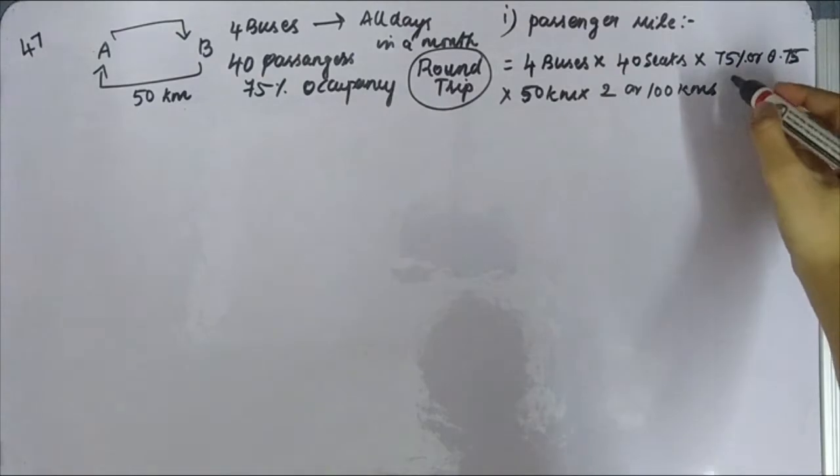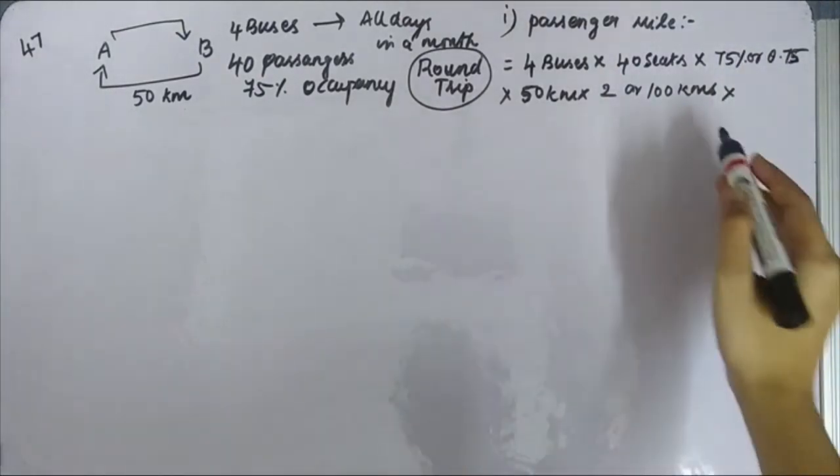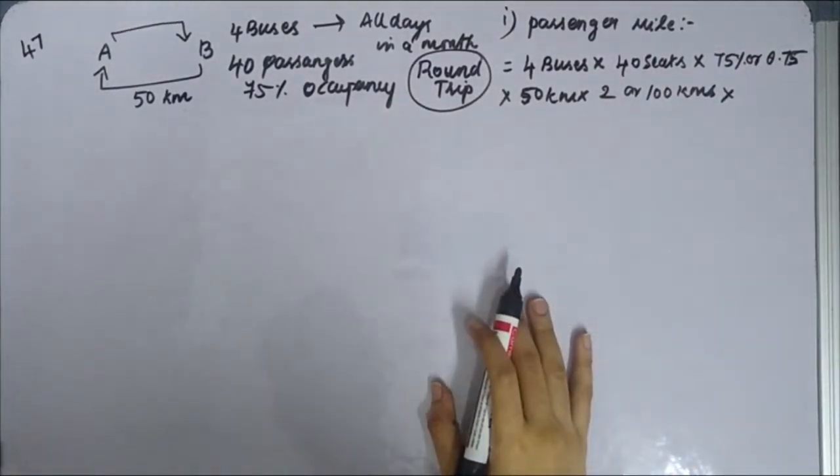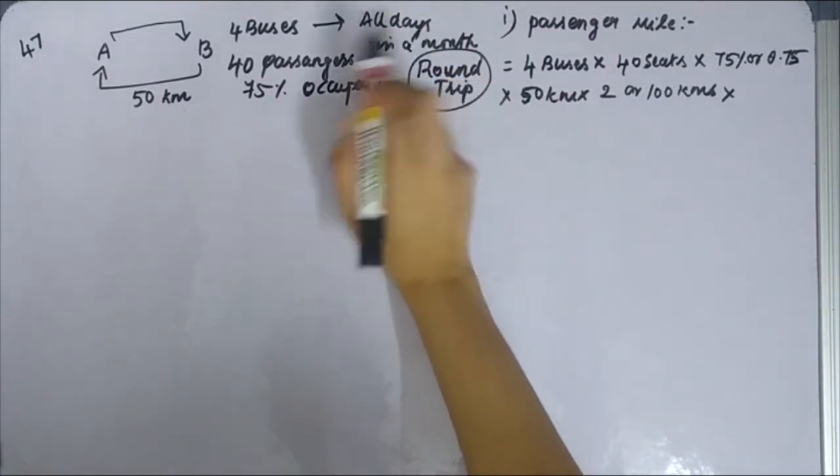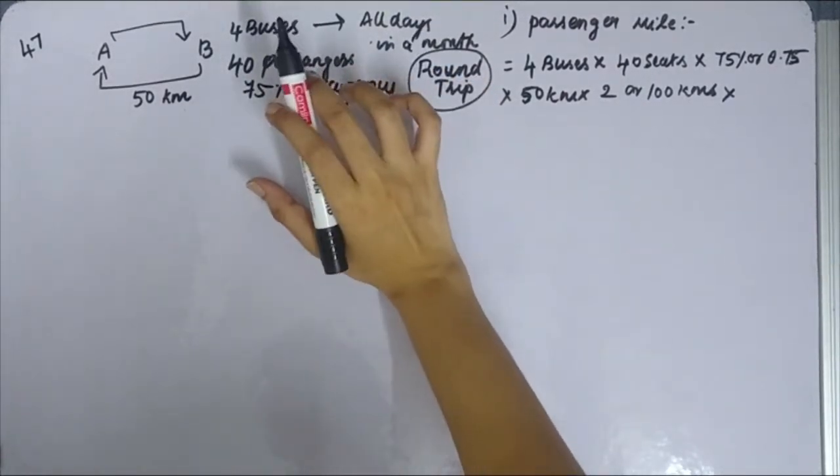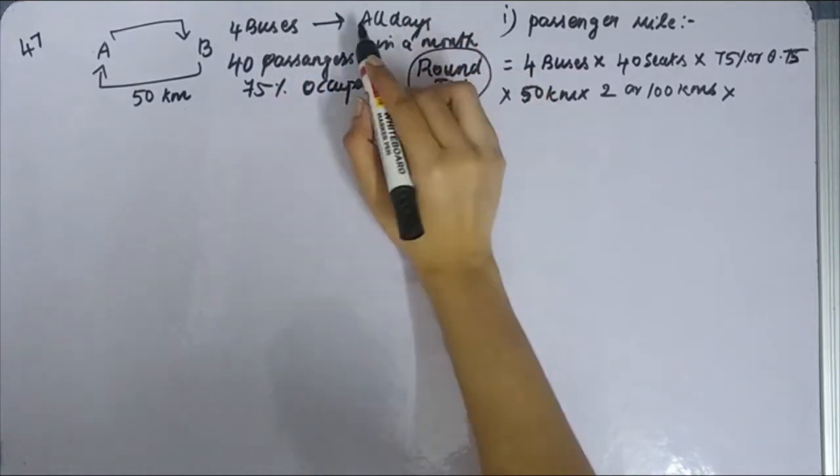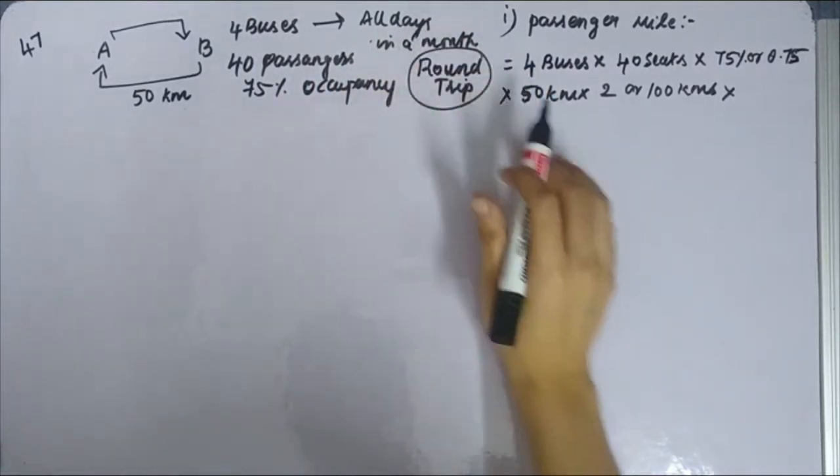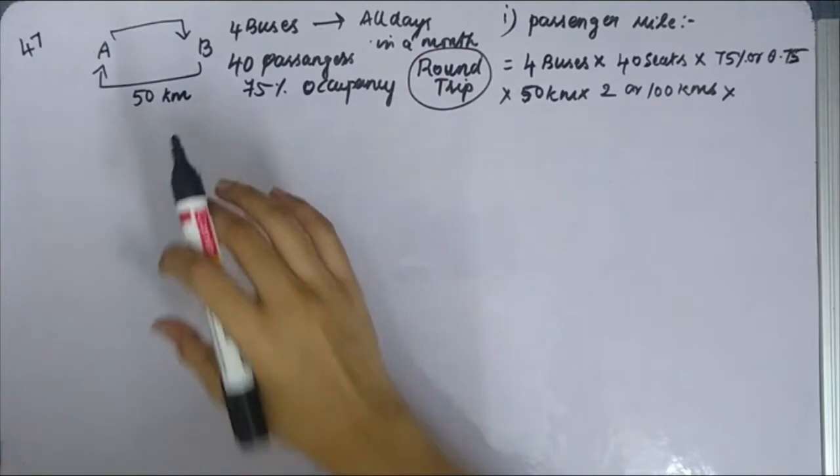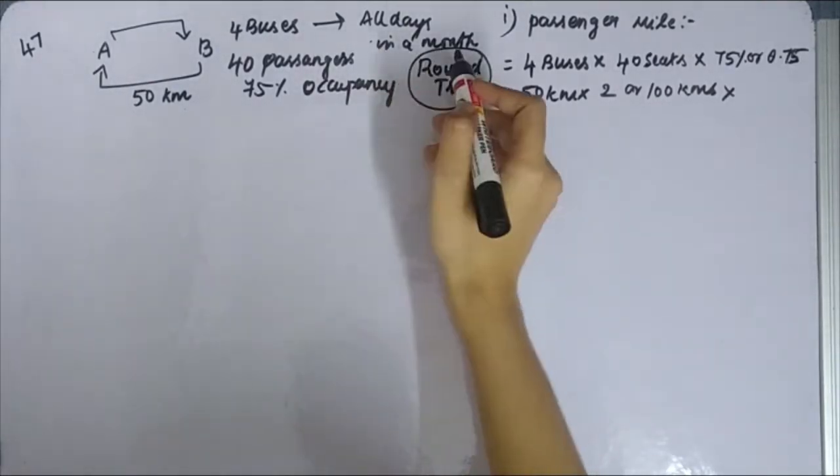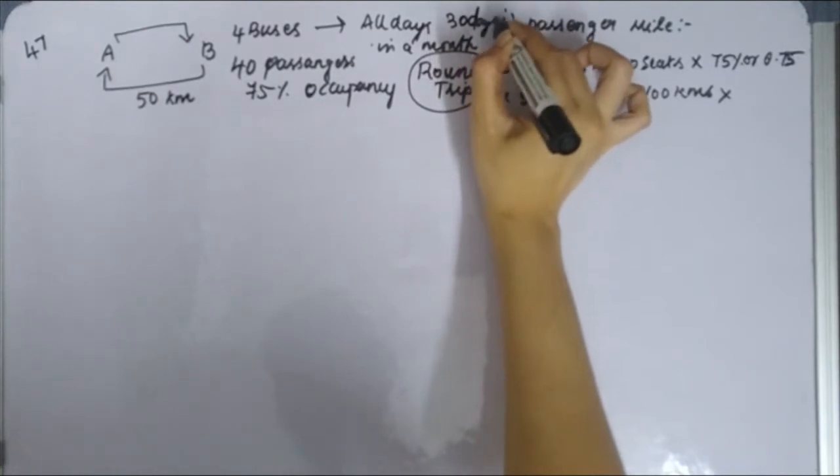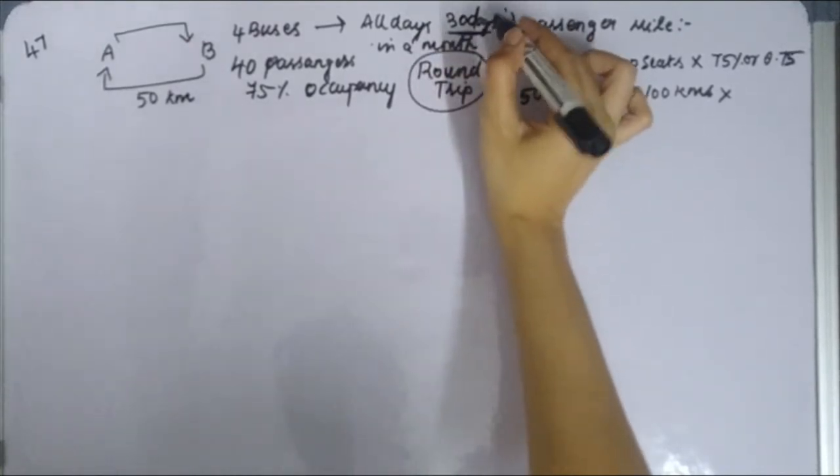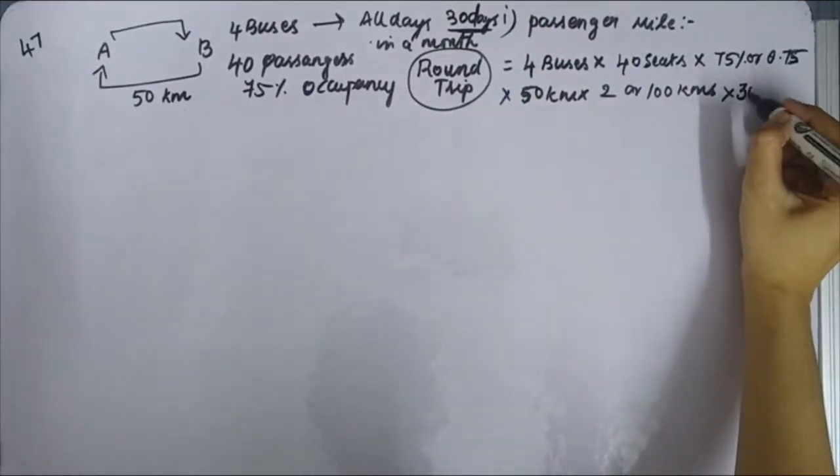And what else they have given? Number of days. What they have given is every number of days in particular. In that case, they have mentioned only all days in a month. You have to mention your assumption that in a month, assume it as 30 days. So into 30 days.